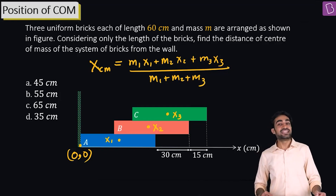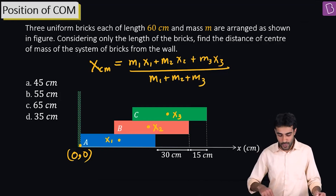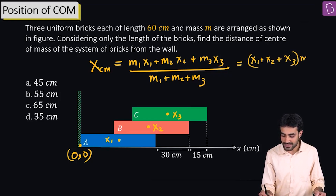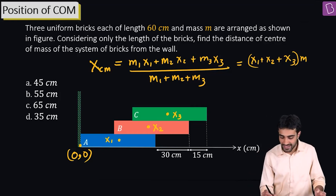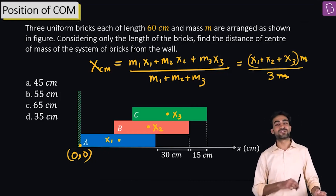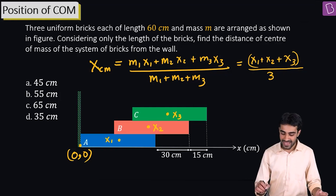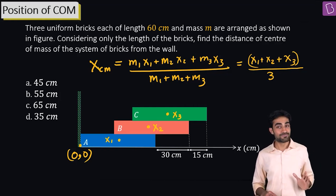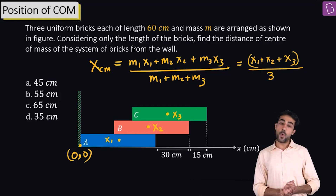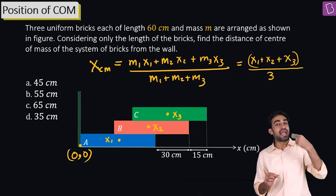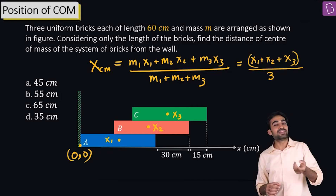Since all three masses are equal, in the numerator we get x1 + x2 + x3 multiplied by mass m. In the denominator we get 3m, and the m cancels. So we have x_cm = (x1 + x2 + x3) / 3. Our mission is to find the x-coordinates of the center of mass of each brick individually.